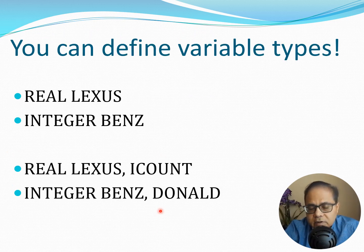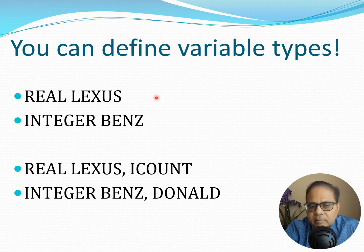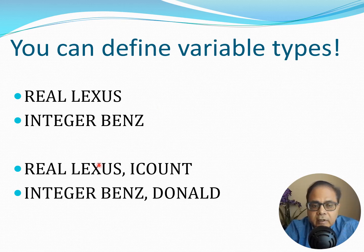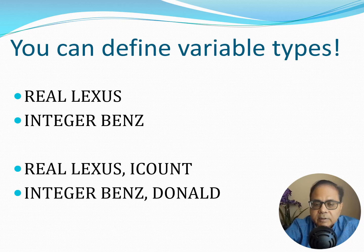You don't need to follow this default nomenclature — you can define your own variables explicitly, which I recommend because many early Fortran problems arose from not defining variables. For example, you can write 'real Lexus' to define Lexus as a real variable, or 'integer Benz' to define Benz as an integer. You can also define multiple variables at once: 'real Lexus, icount' or 'integer Benz, Donald'.